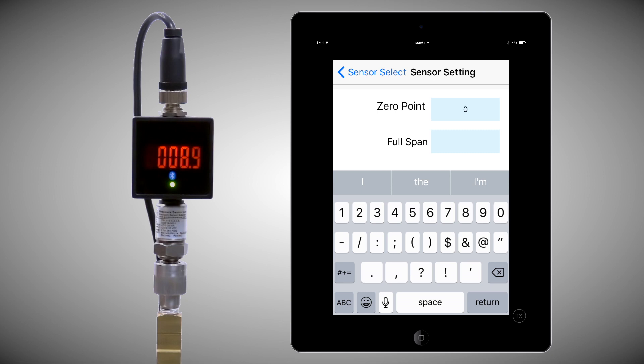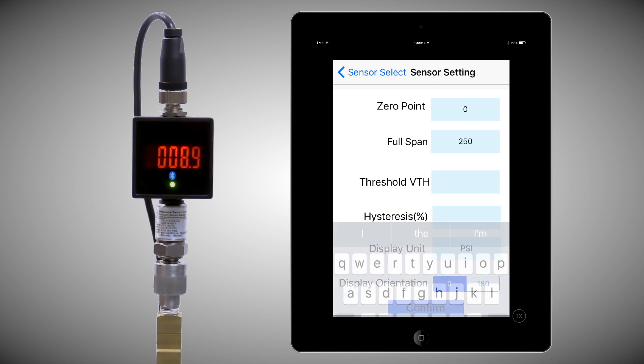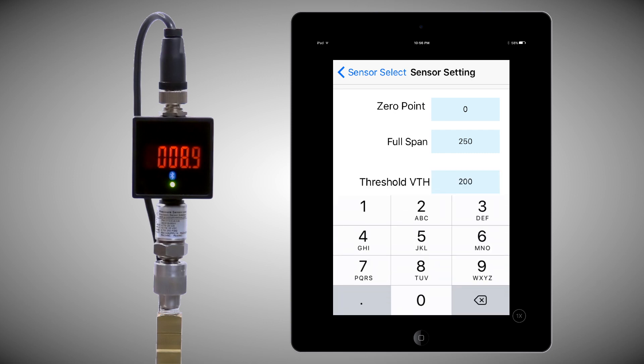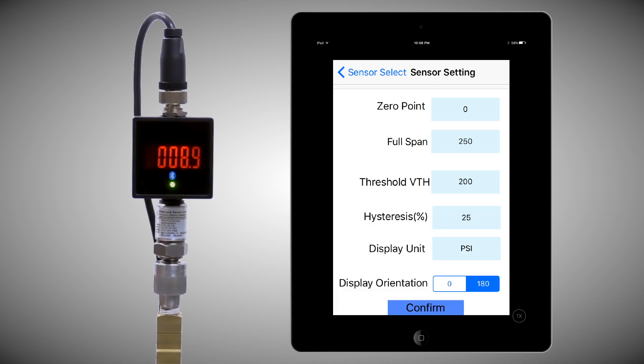Select for zero and full span. Configure the threshold and hysteresis band for the isolated relay contact. Configure the display orientation. Then simply confirm.